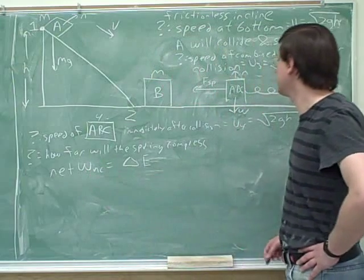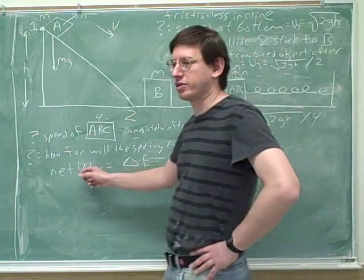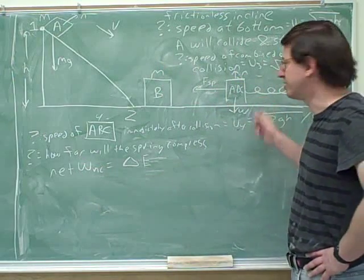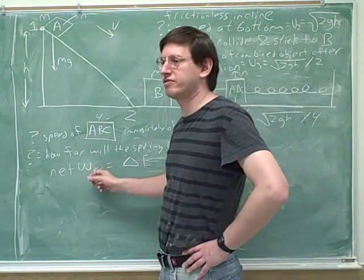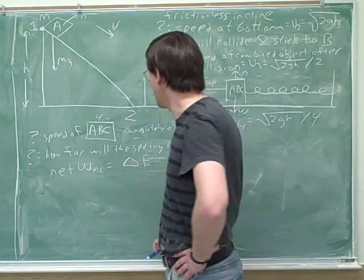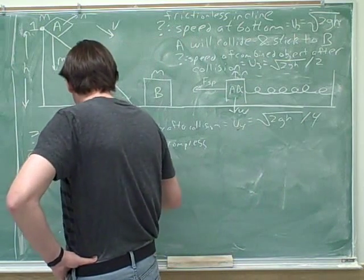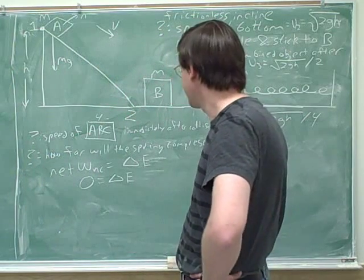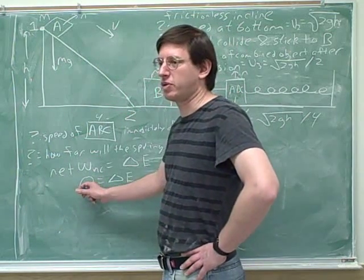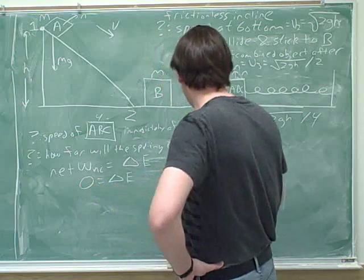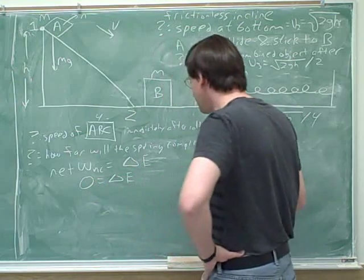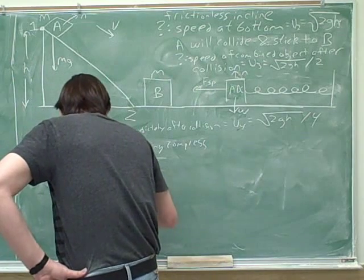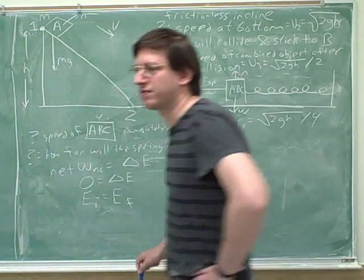Is the normal force going to do any work we need to include here? No, because it's perpendicular to the movement. The normal force is non-conservative, but it does zero work. So the left-hand side ends up being zero again, which means we can rewrite delta E equals zero as E-initial equals E-final.